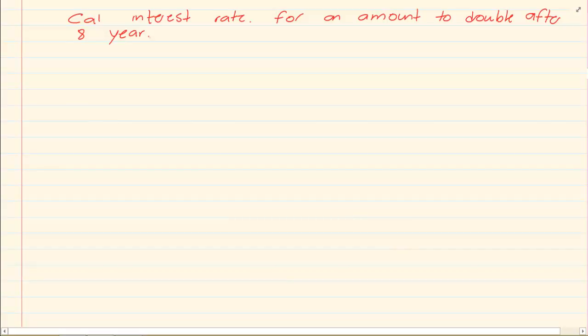Now the last part of our summary is to calculate the interest rate. If I say calculate the interest rate for an amount to double after 8 years. Now sometimes when they are not very specific and they don't give you an amount because we know it's going to double, you can use any amount. The method is still the same. You start with your payment. You substitute what you have.